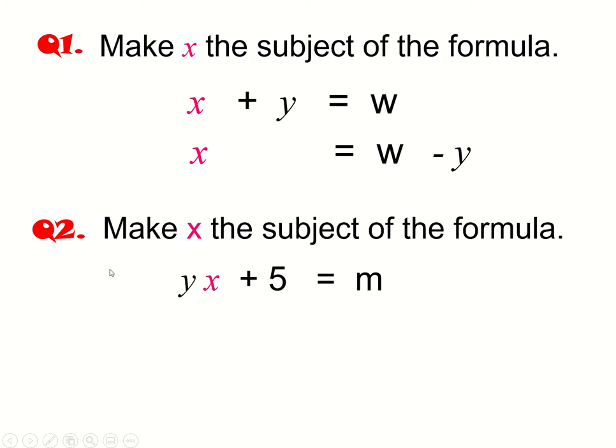For number two, we again want to make x the subject of the formula, so we've got yx plus 5 equals m with x on this side. We're going to rewrite it out again. We want to get x on its own. So the first thing that seems obvious to do, same as above, let's move that plus 5 across the equal sign, and it goes from plus 5 to minus 5. But we've still got yx, and remember there's an imaginary multiplication sign in there that we don't write for shorthand, but it is there because that means y times x.